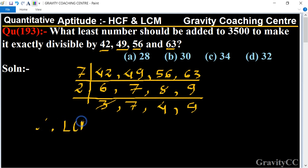equals 7 multiplied by 7 multiplied by 4 multiplied by 9, which equals 3528.